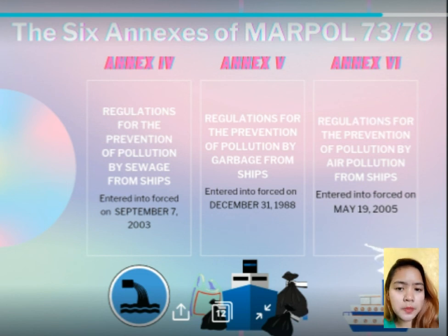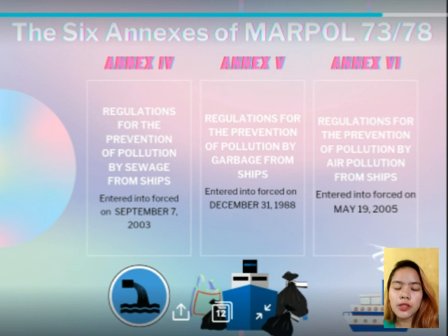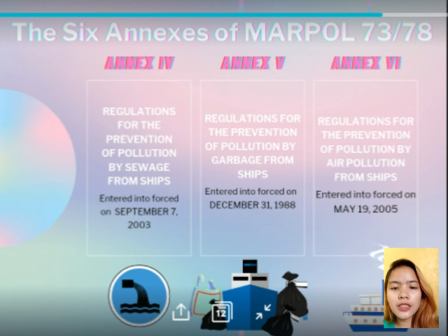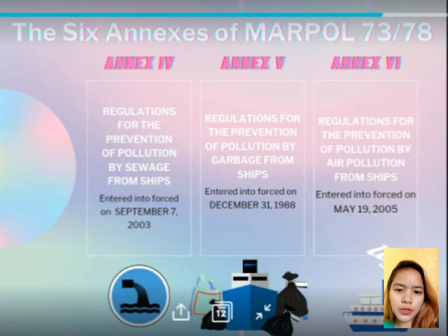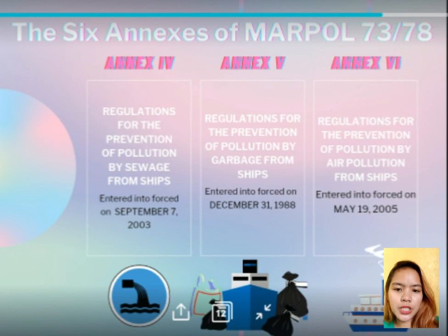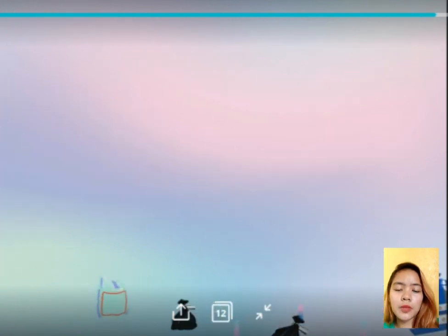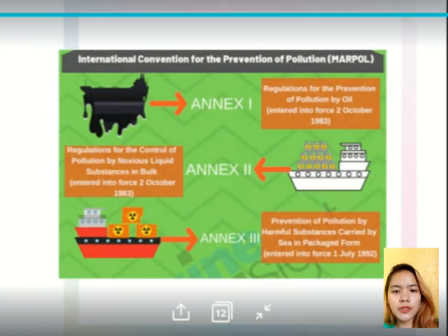Lastly, Annex 6 covers the prevention of air pollution from ships, entered into force on May 19, 2005. It sets limits on sulfur oxide and nitrogen oxide emissions from ship exhausts and prohibits deliberate emissions of ozone-depleting substances. Designated Emission Control Areas set more stringent standards for sulfur oxide, nitrogen oxide, and particulate matter. A chapter adopted in 2011 covers mandatory technical and operational energy efficiency measures aimed at reducing greenhouse gas emissions from ships.